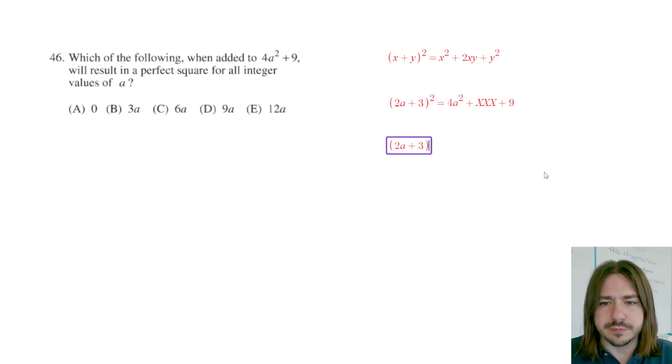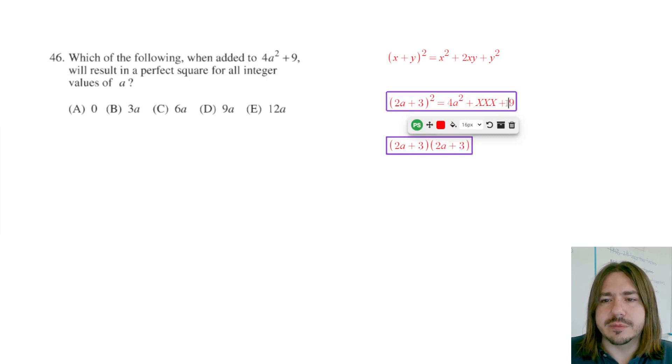2a plus 3 times 2a plus 3. 2a times 2a is going to be 4a squared. And to get the last term you'd have 3 times 3 equals 9.